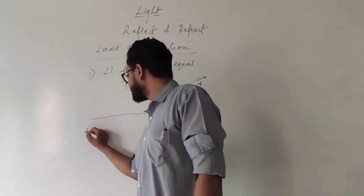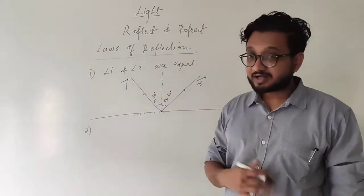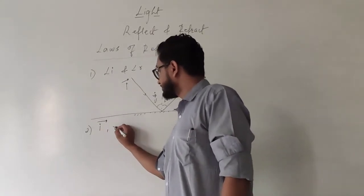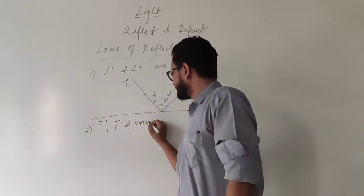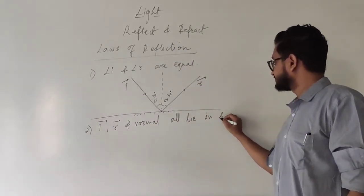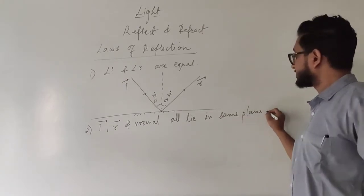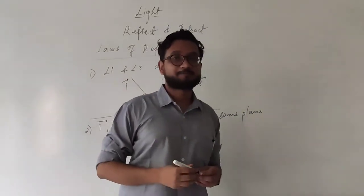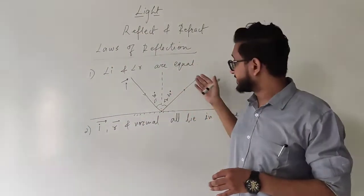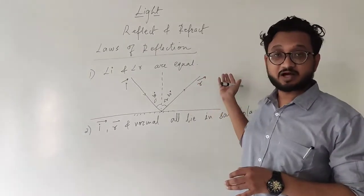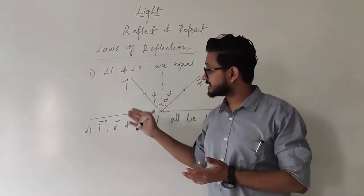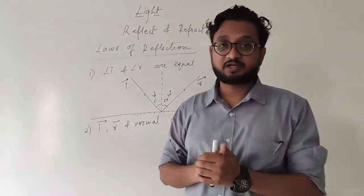The second law of reflection states that the incident ray, reflected ray, and the normal all lie in the same plane. They cannot change — if the incident ray and normal are in one plane, then the reflected ray cannot be in another plane. They will all be in the same plane. This is what we studied about the laws of reflection in class 8.